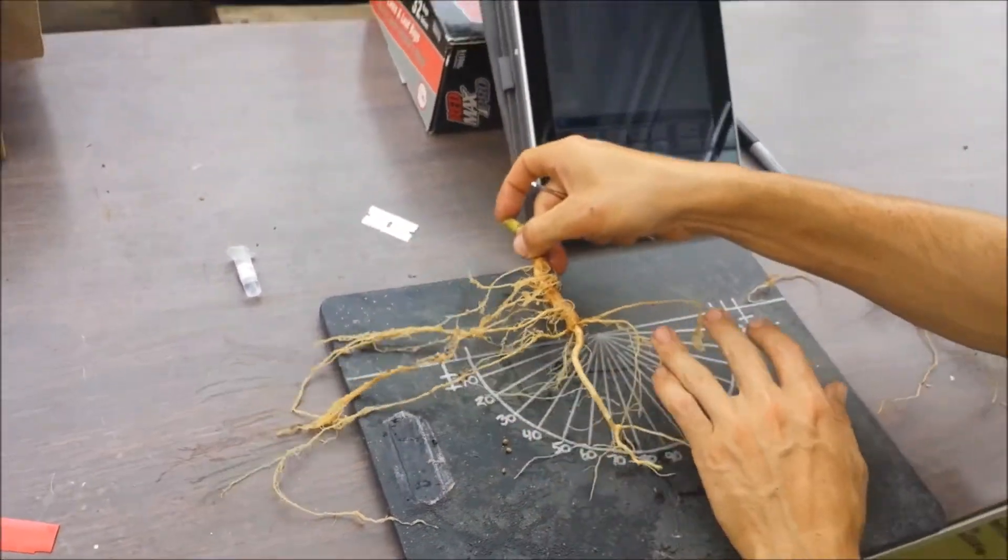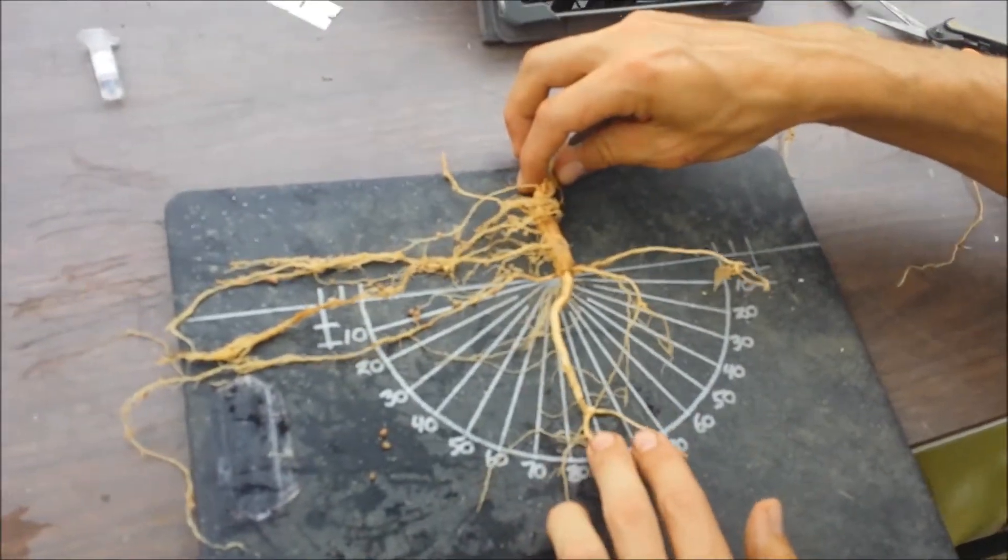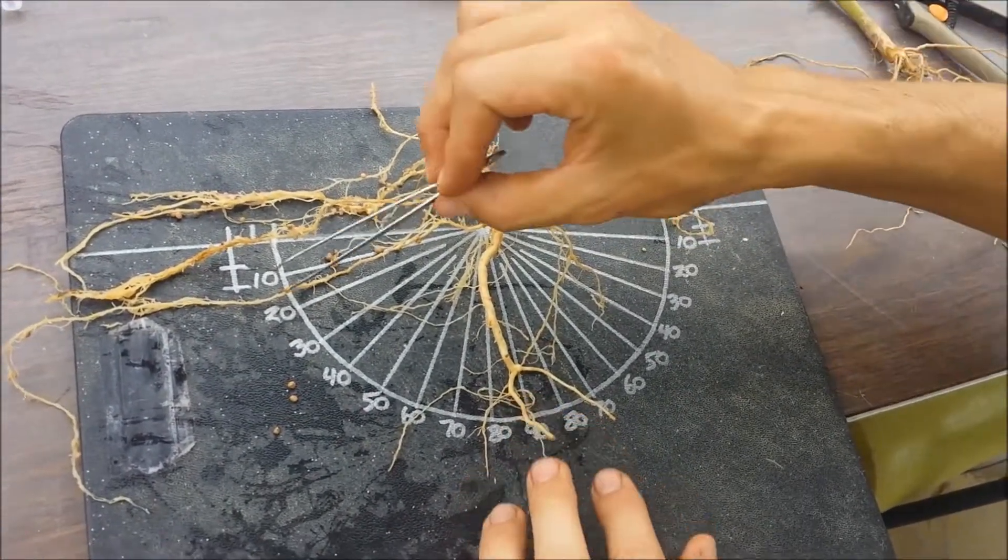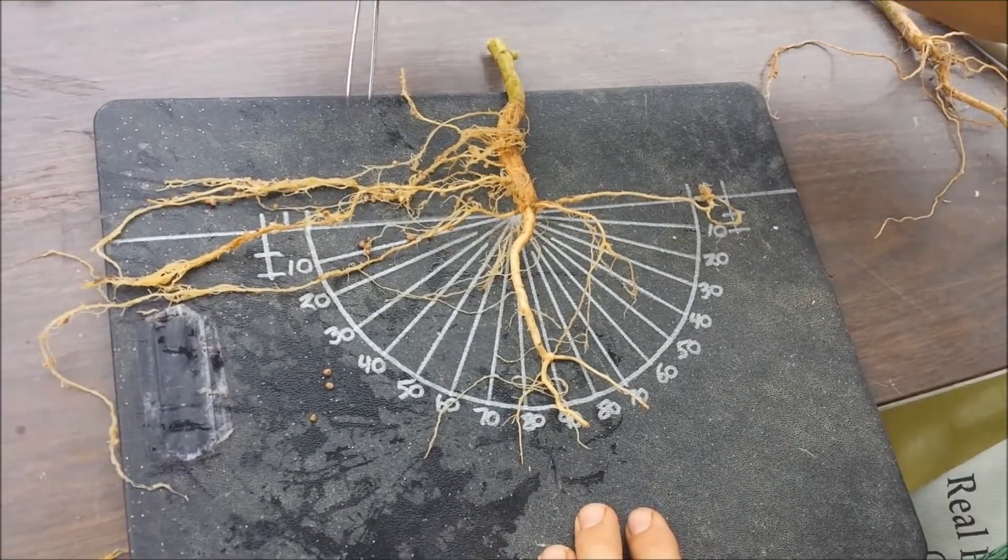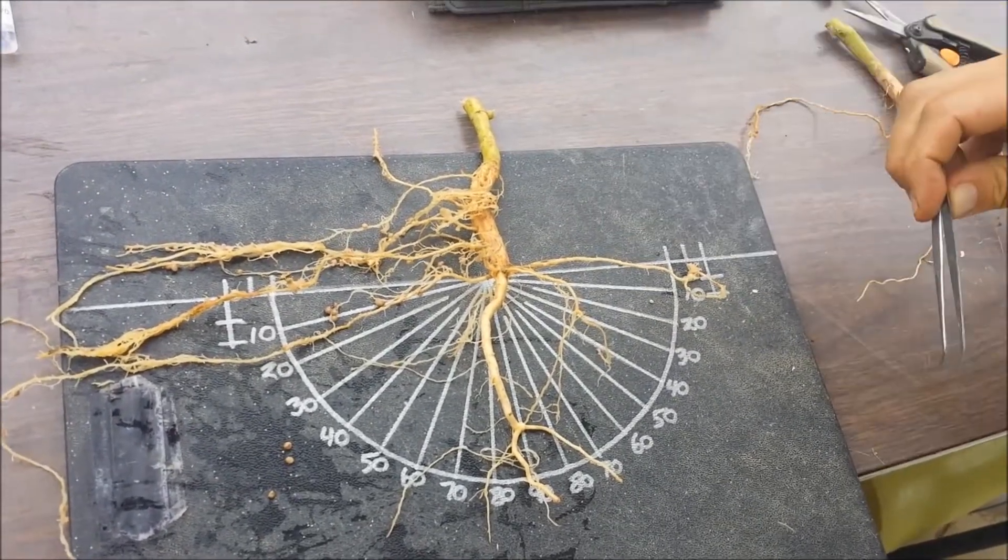Then I would look at angles. So I'd be interested in the angles of the basal roots. In this case, I'm looking at where they cross this line, which is a 10 centimeter arc. This one is fairly shallow, so I would score this one between 10 and 20 degrees from horizontal.